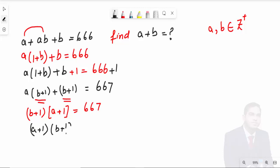So (a+1)(b+1) = 667. Since a and b belong to integers, replacing the value of a, this value must be equal to or greater than 2, and this also must be equal to or greater than 2.